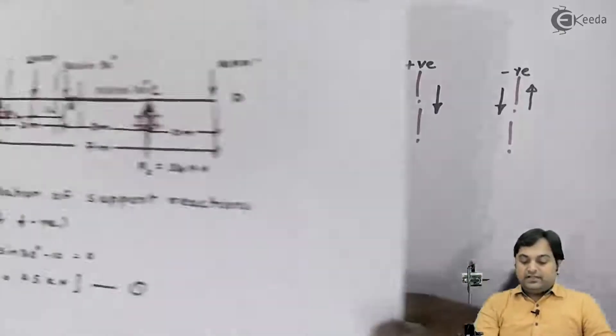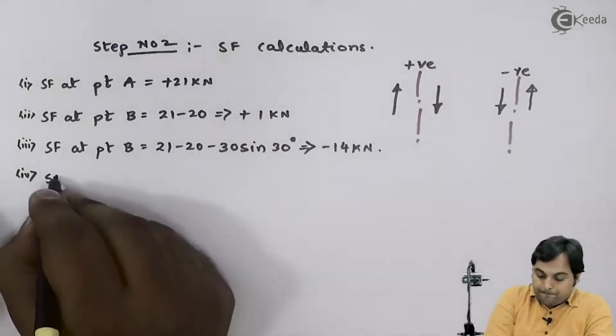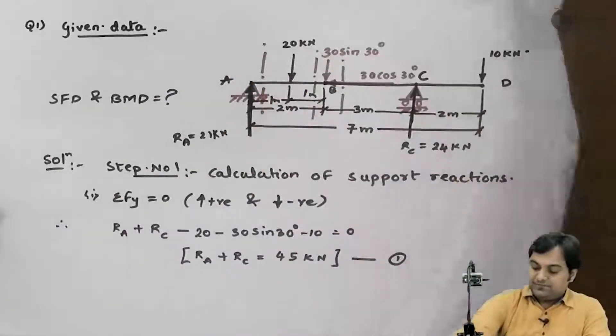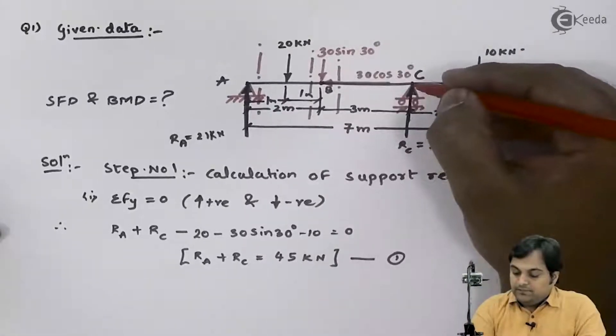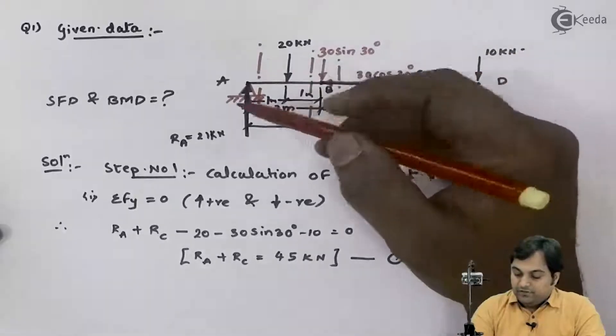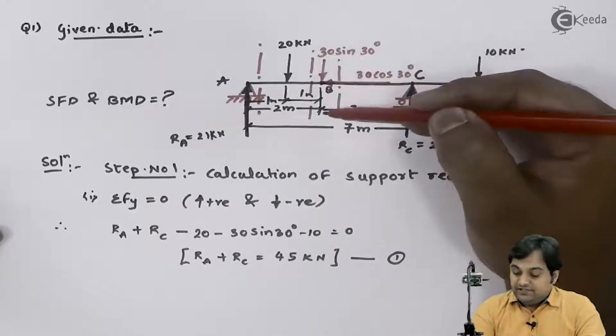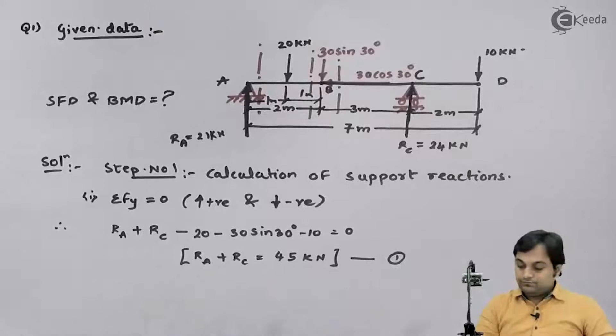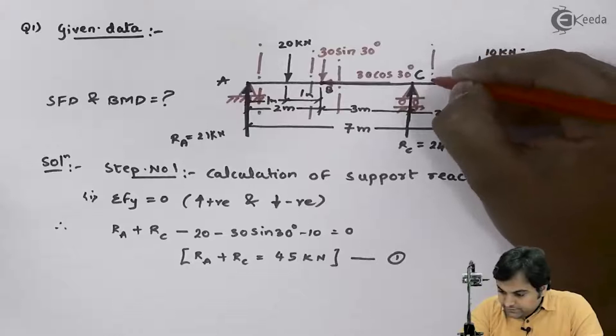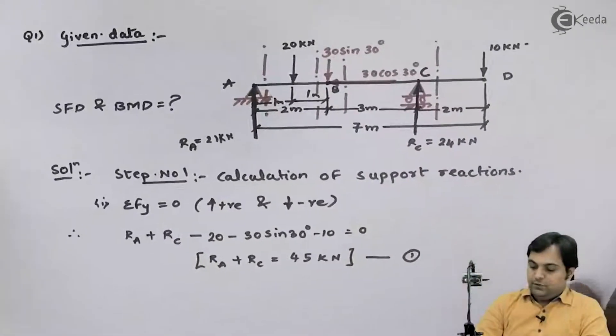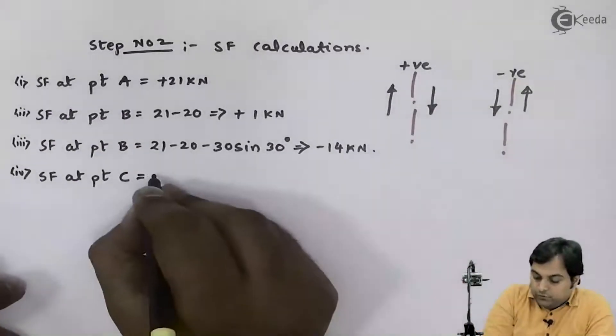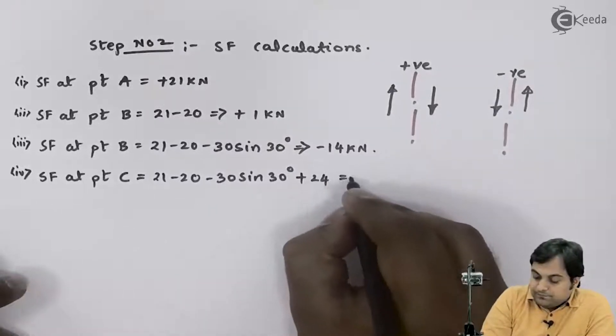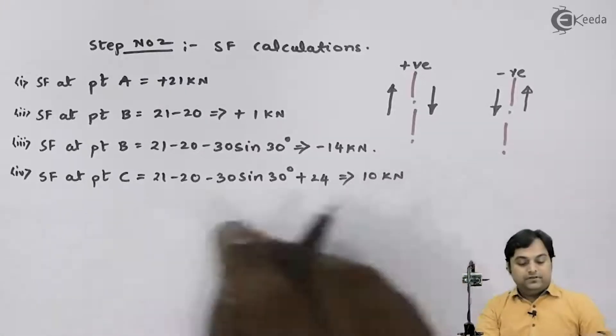After this I will calculate SF at point C. For that I will be taking the section at point C. The value is 21 minus 20 minus 20 minus 30 sine 30, and this force is upward so it would be positive plus 24. If I take the section just to the right of C, it will be 21 minus 20 minus 20 minus 30 sine 30 plus 24, so this comes out to be plus 10 kilonewton, the value of shear force at point C.